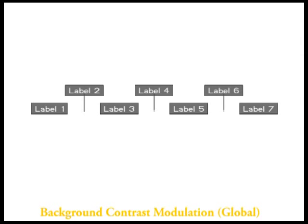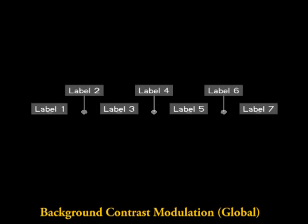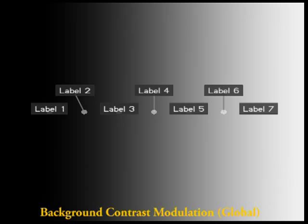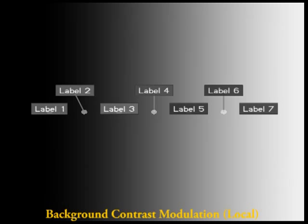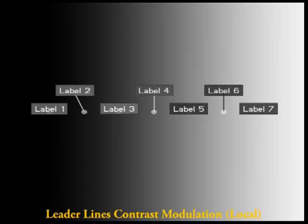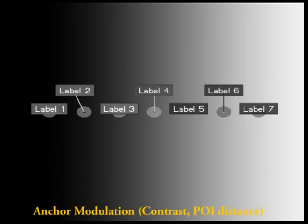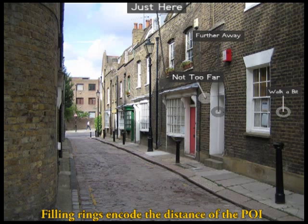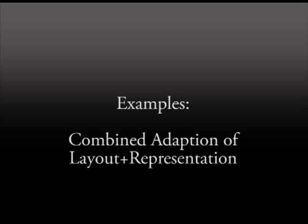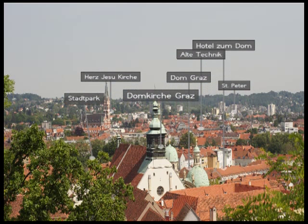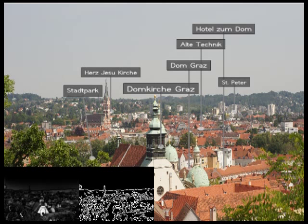Our adaptive approach also improves the readability of labels by increasing the contrast to the video background. The contrast can be adapted globally for all labels or locally for only selected labels. Note that also the presentation of leader lines and anchor points is adapted. The anchor point presentation also reflects the distance of a point of interest from the user. The following examples demonstrate the adaptation of layout and representation depending on the shown video background. The left inset shows the saliency map of the respective image, the right inset the edge map.